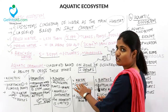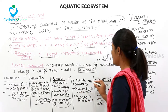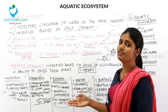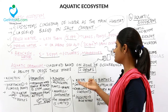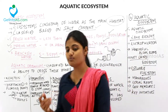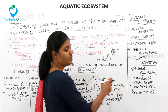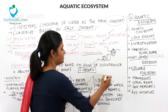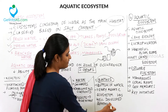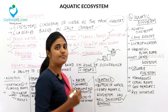Necton are excellent swimmers because they overcome water currents. Even a small insect or a large blue whale can be grouped as necton, because both overcome water currents. Benthos are organisms found at the bottom of the water. Every aquatic ecosystem has a well-developed benthos layer.